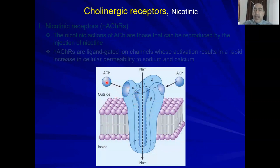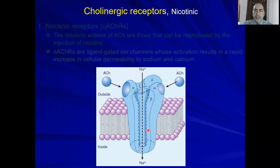Acetylcholine is the ligand for the ligand-gated ion channel. The ligand binds to the nicotinic receptor, which then undergoes a conformational change and allows the passage of ions like sodium and calcium. This can lead to action potential or certain parasympathomimetic action on certain effector organs.